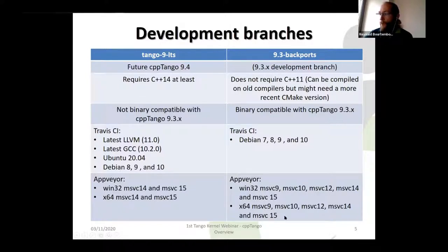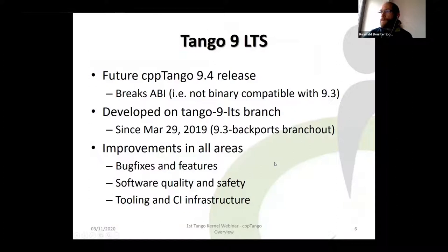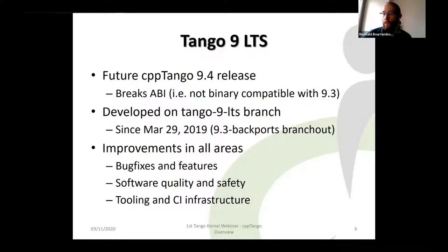For the 9.3 backports branch we also test with older MSVC 9 compiler. The 9 LTS branch was created in 2019, with the idea of making improvements in all areas: bug fixes, new features, improved software quality and safety, and better tooling and continuous integration infrastructure.